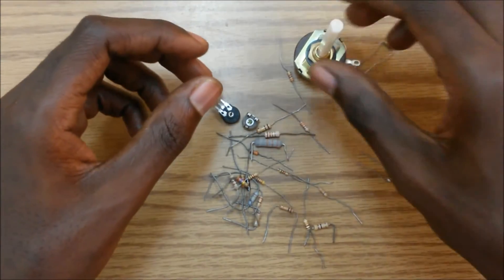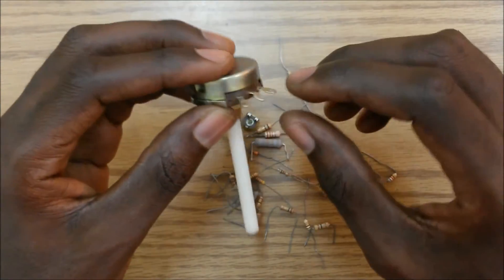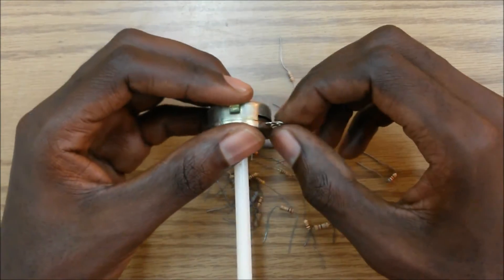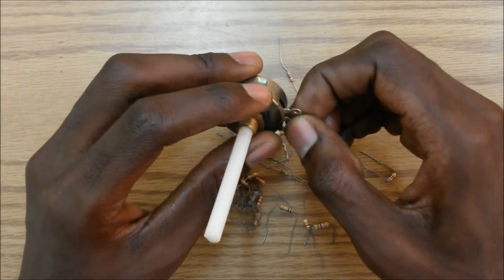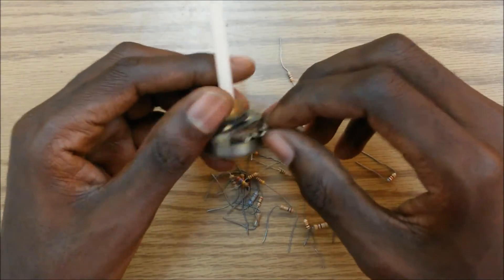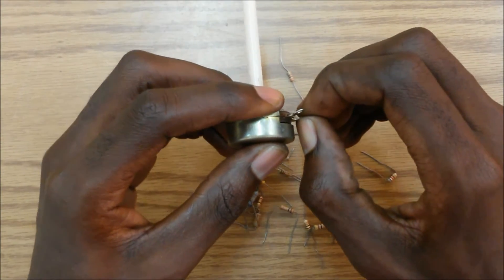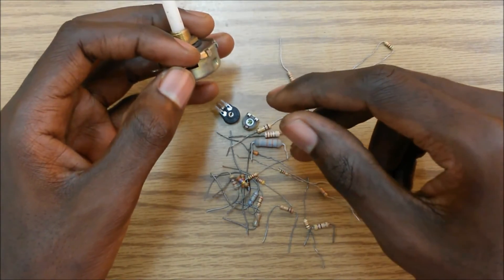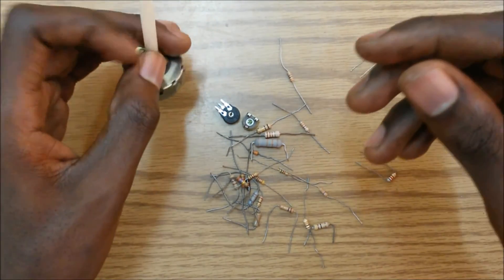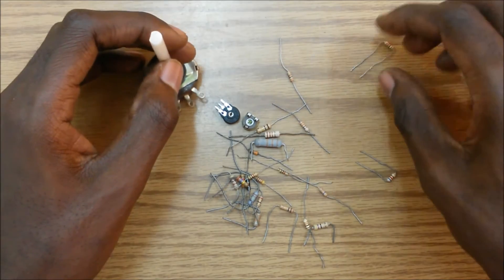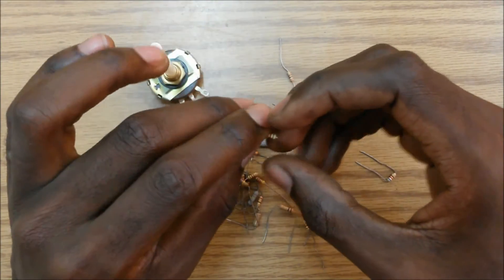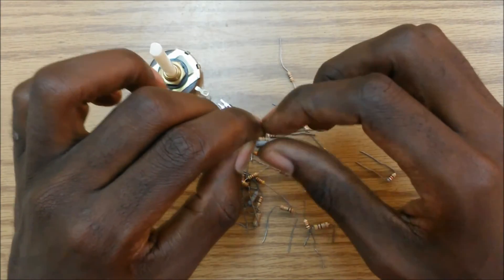So when building our electronic circuits, we will on almost all occasions be needing resistors. So how do we choose our resistors to use in our circuits? There are two things we need to consider when we are choosing a resistor: we need to consider the maximum power rating and also the current which we need to be flowing in the circuit.